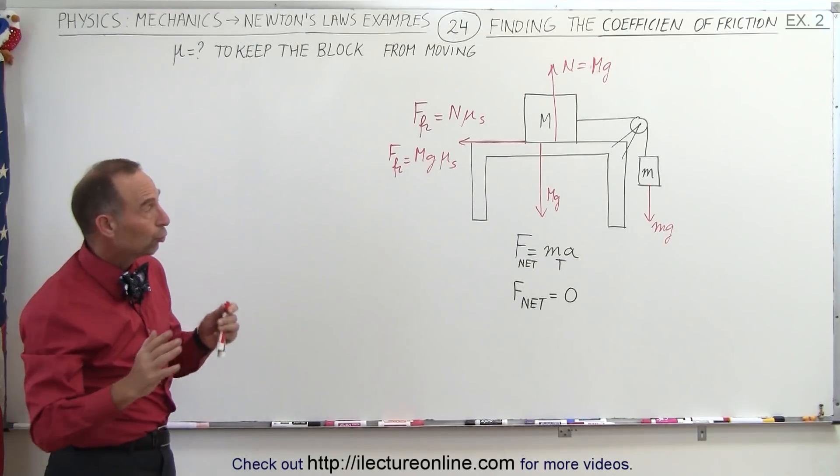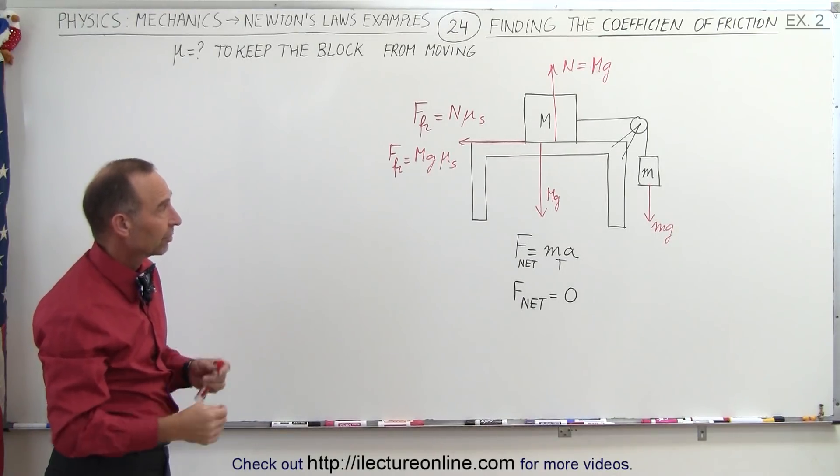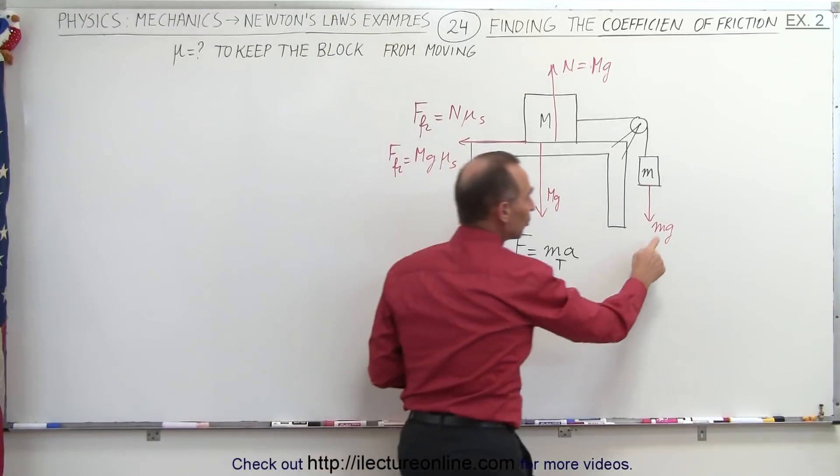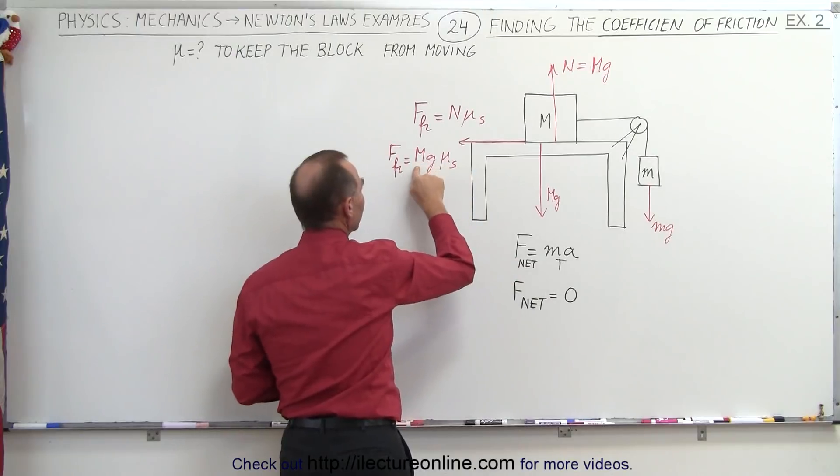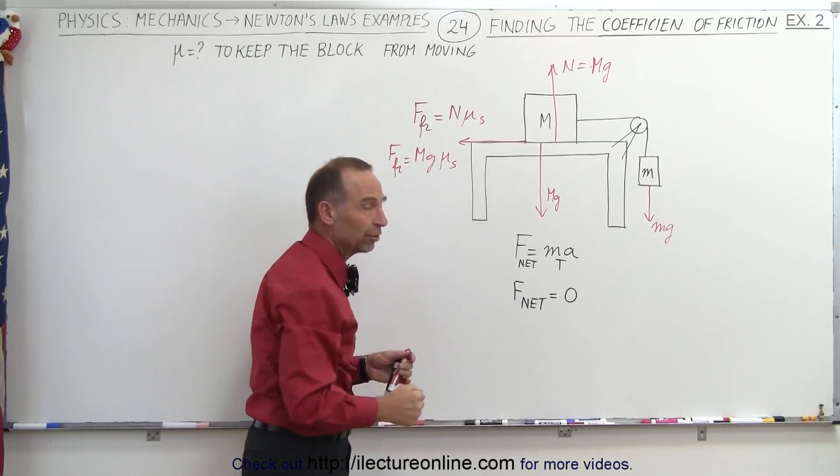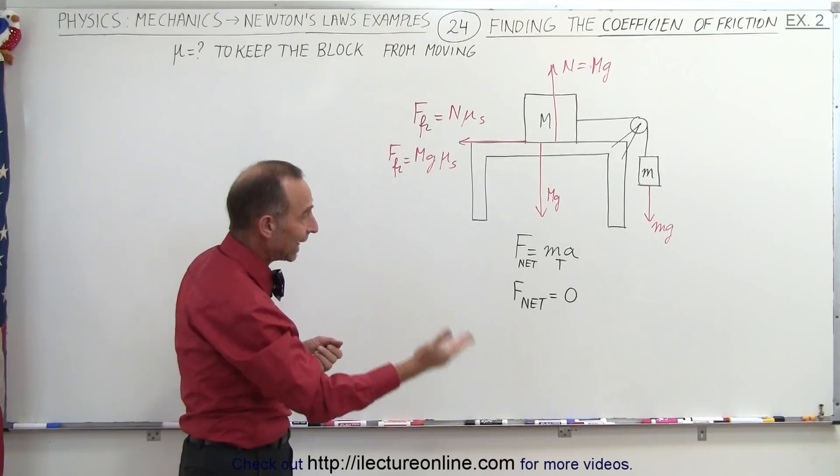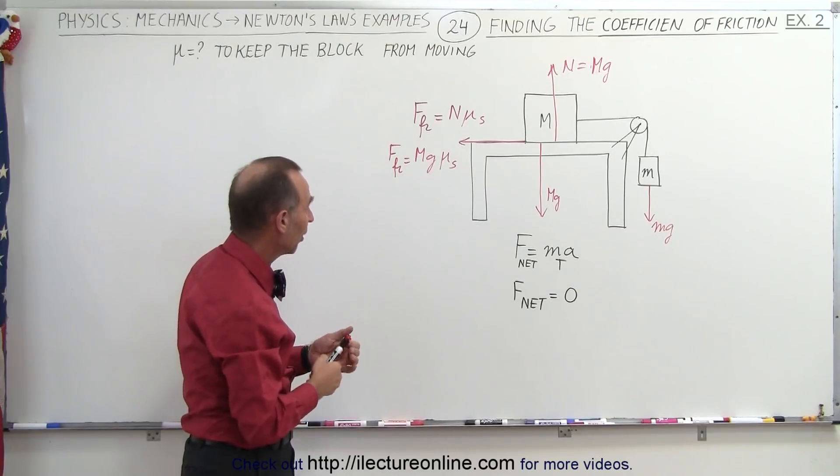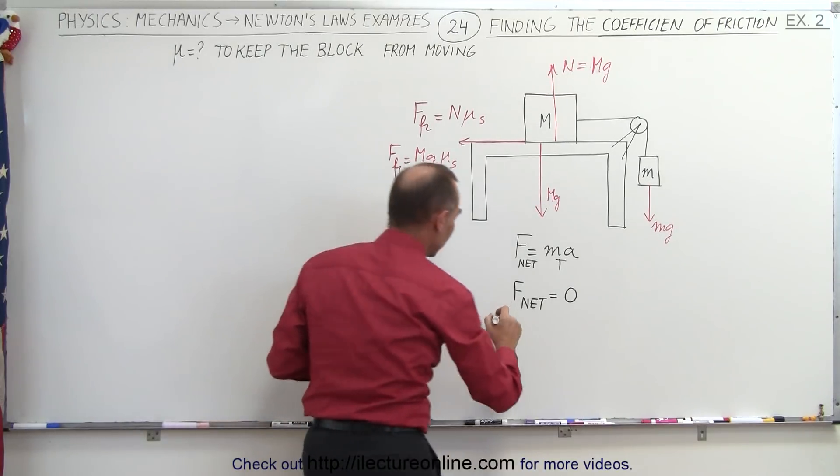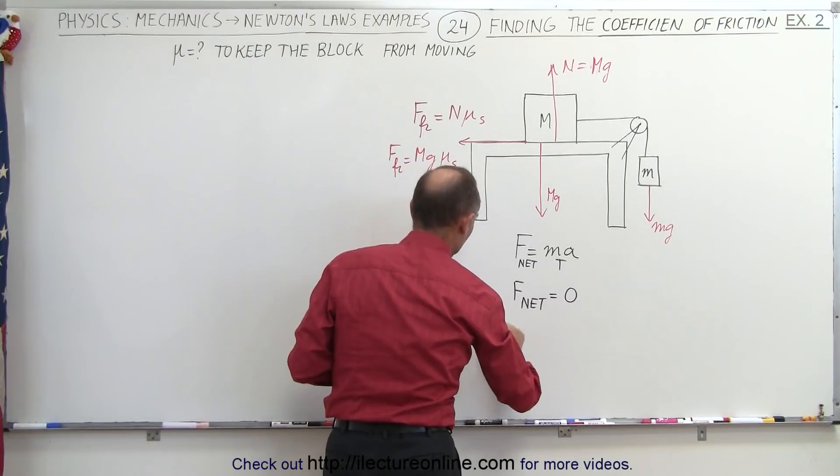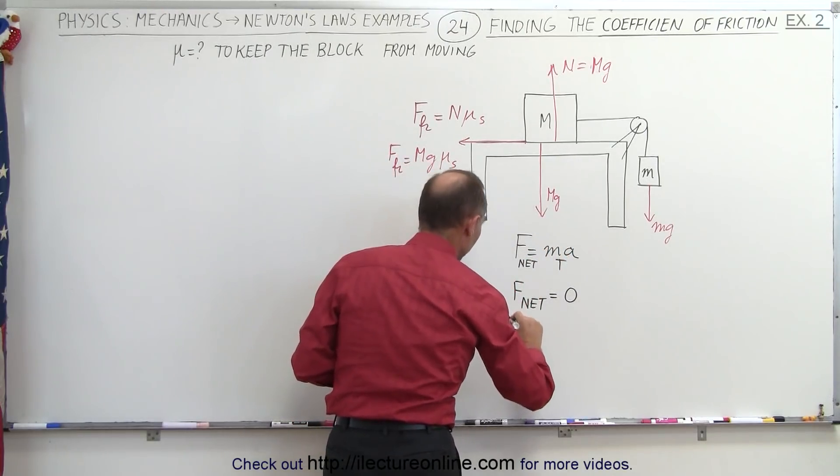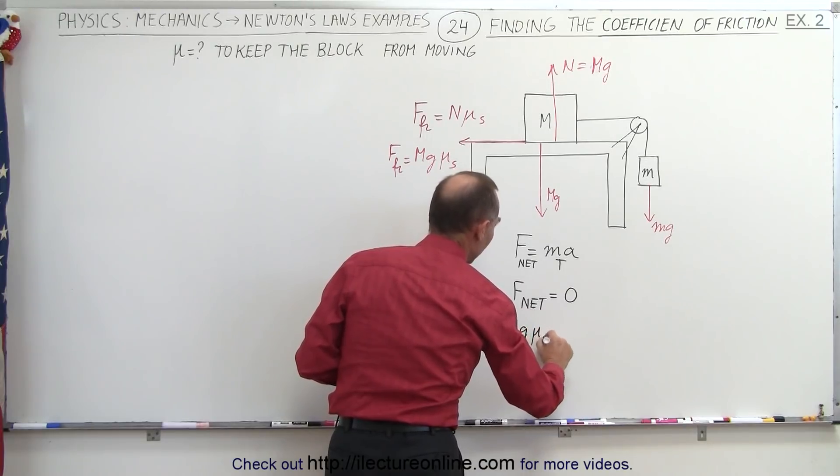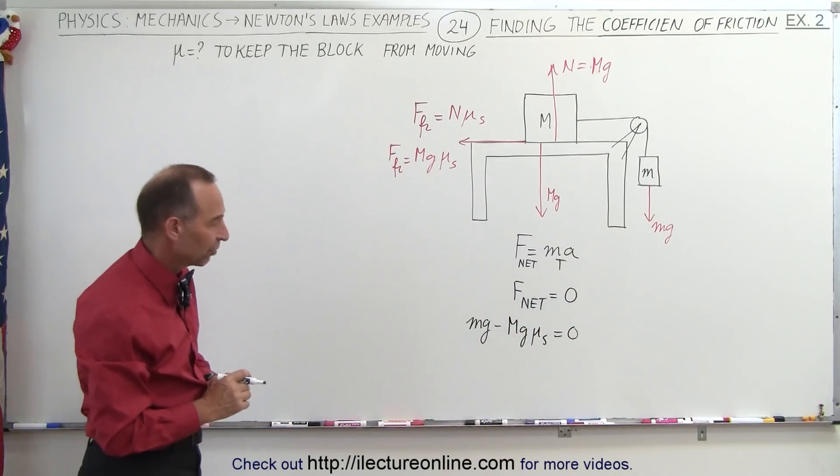So now we can see that there are two forces that will affect acceleration. We have the small Mg here which tries to aid the acceleration, and we have the friction force which opposes the acceleration. So by definition, the net force is all the forces aiding minus all the forces opposing the acceleration. So in this case that would be Mg, which tries to make the system accelerate, minus the friction force, which is big Mg times the coefficient of static friction.